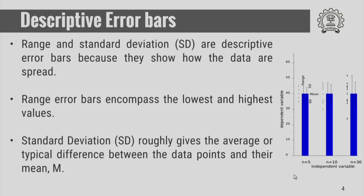The standard deviation and range error bars are shown in this figure for n equals 5, and you can see that the range is the difference between the minimum and maximum data point. Similarly, it is shown for a sample size of n equals 10 and n equals 30, and again the range is the difference between the maximum and minimum data point. The standard deviation gives you the typical or average difference between the mean and the data points.